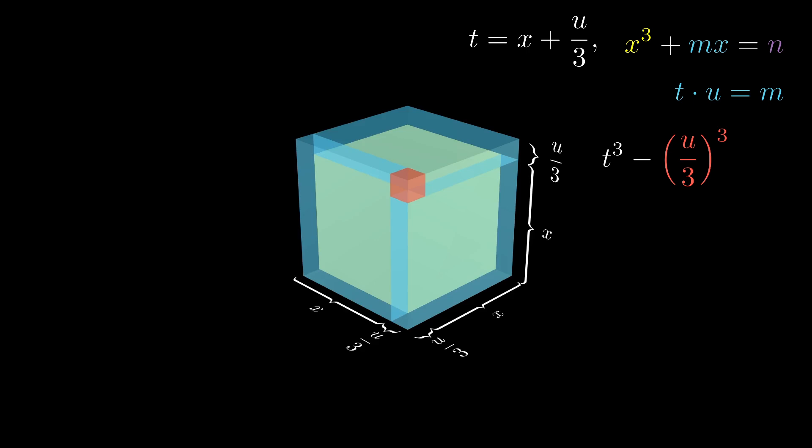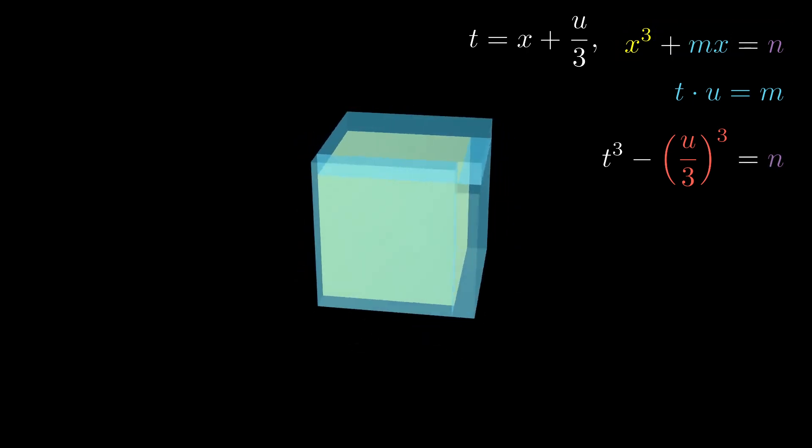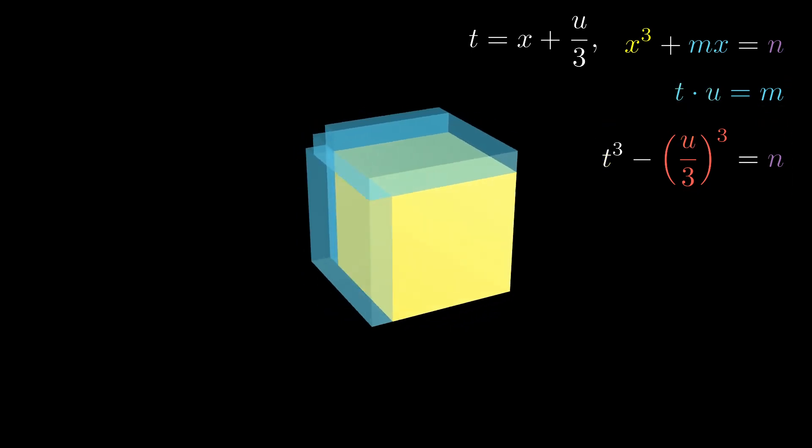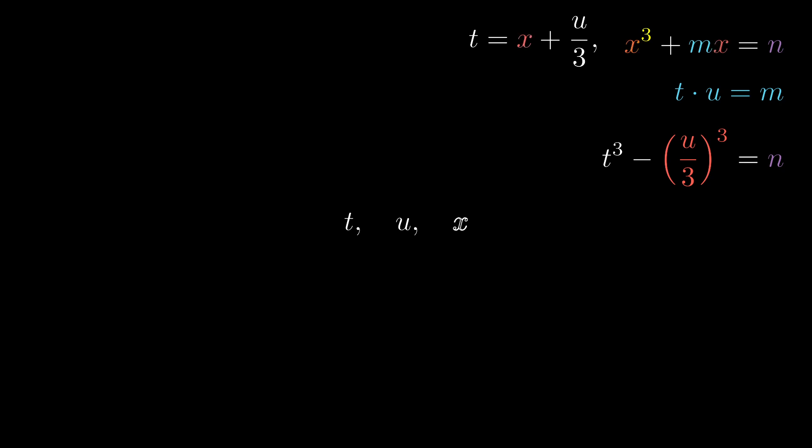This equation will give us the volume of the yellow and blue shape, exactly like our initial equation. The difference is that we now have two unknowns and two equations which will let us solve for t, u, and finally for x. Therefore, we can use this to derive a general formula.